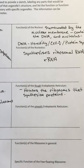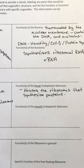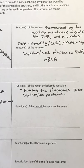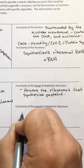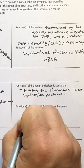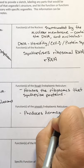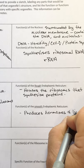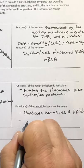The rough ER is basically a series of membranous tubules that have ribosomes associated with them. The proteins that are made at the ribosomes on the surface of the rough endoplasmic reticulum are temporarily stored in the membranes and then exported out of the cell. The smooth ER basically produces hormones and lipids.